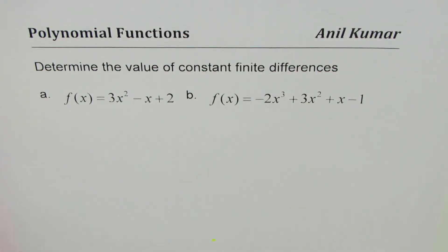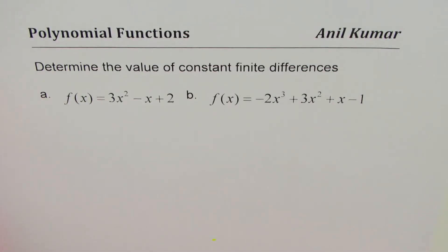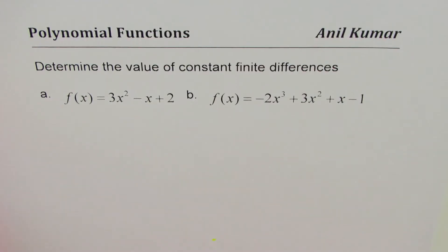In this video we will learn a formula to find the constant finite difference from the given equation of a polynomial. The question is: determine the value of constant finite differences for two polynomials. Part A is f(x) = 3x² - x + 2, and Part B is f(x) = -2x³ + 3x² + x - 1. You can always pause the video, answer the question, and then look into my suggestions.